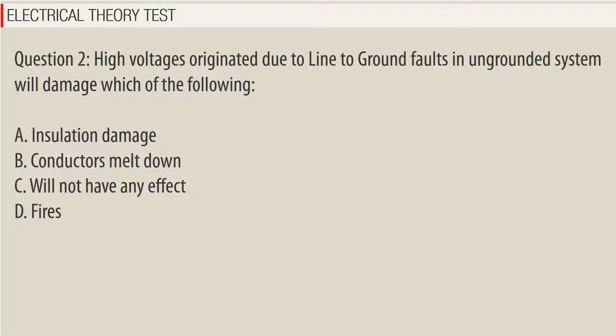Question 2: High voltages originated due to line-to-ground faults in an ungrounded system will damage which of the following? A. Insulation damage, B. Conductors melt down, C. Will not have any effect, D. Fires. Answer: A.